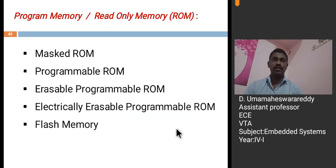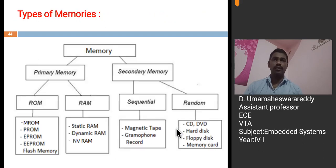Coming to secondary memory, secondary memory can be divided into sequential memory and random memory. Coming to sequential memory, your magnetic tapes and gramophone recorders comes under sequential memory which stores data sequentially. Magnetic tapes which are used in tape recorders stores data sequentially in a tape. The same way, the gramophone recorders also. Coming to random memory, your CDs, compact disc, DVDs, hard disc, floppy disc, memory cards, these are all.